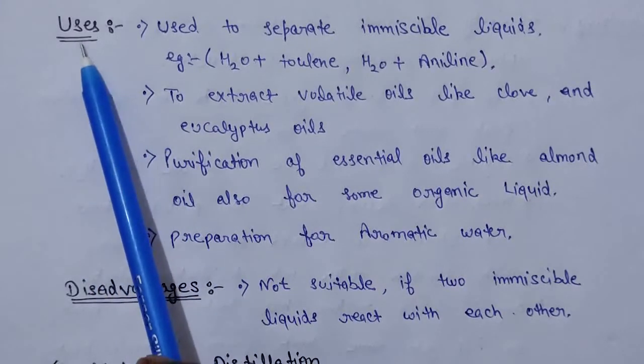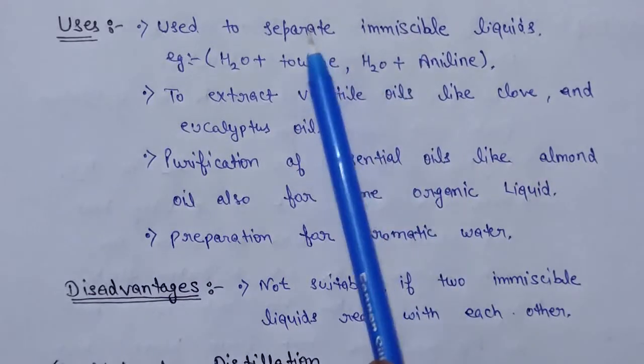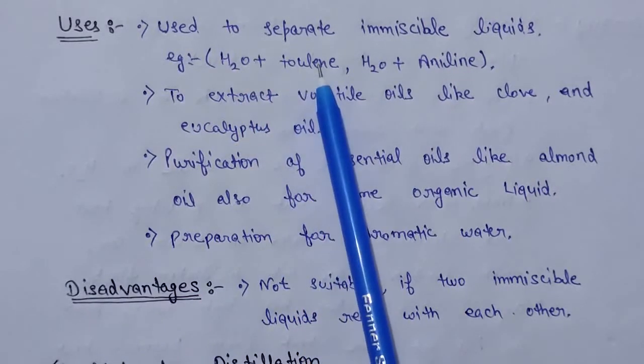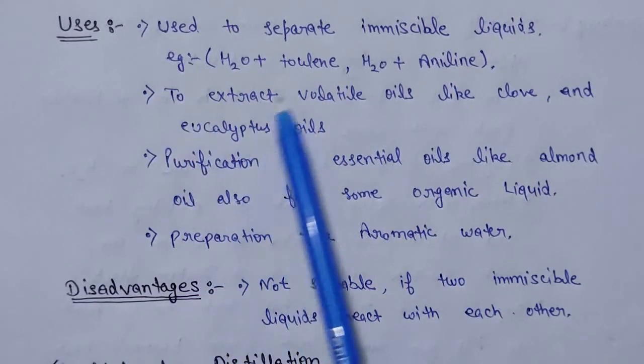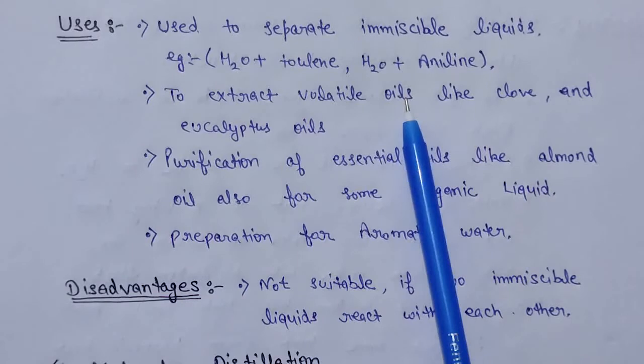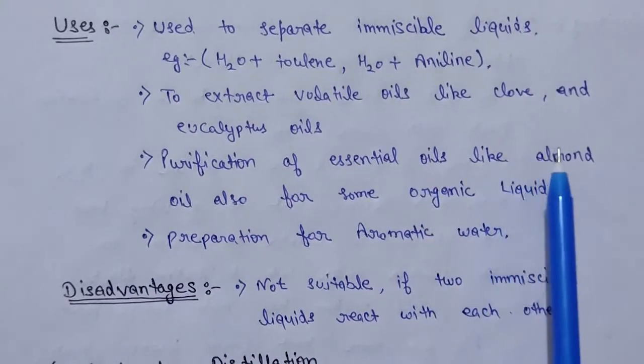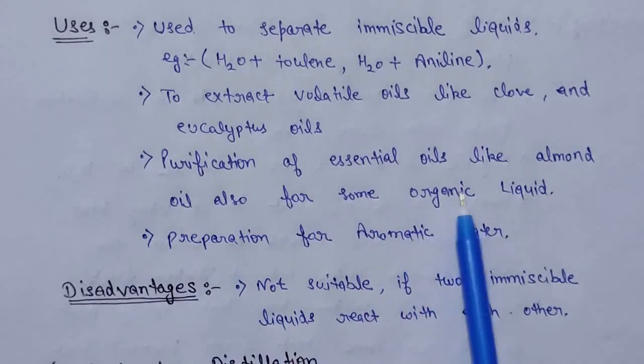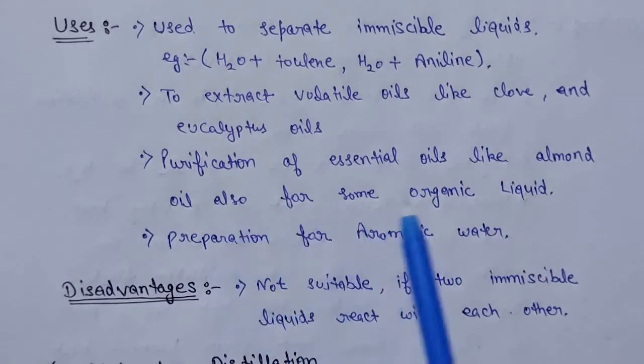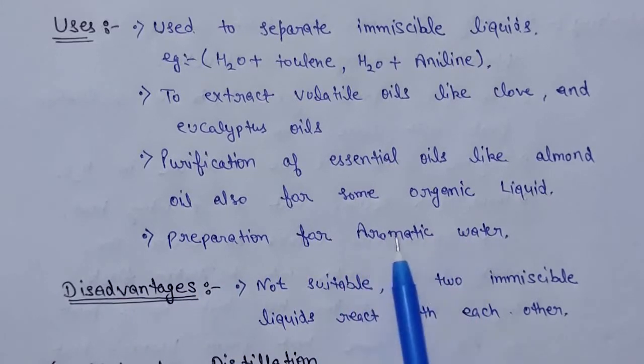Next is uses. Used to separate immiscible liquids, we can use two immiscible liquid compounds like water plus toluene and water plus aniline. To extract volatile oils like clove and eucalyptus oils. Purification of essential oils like almond oil and also for some organic liquids, and preparation for aromatic water.